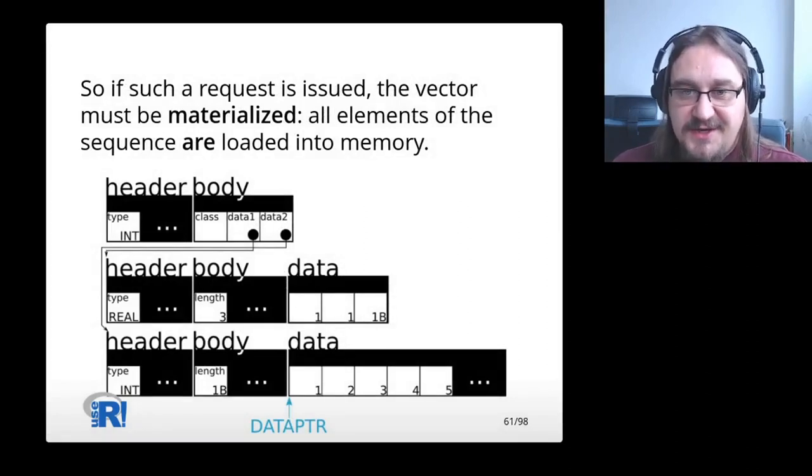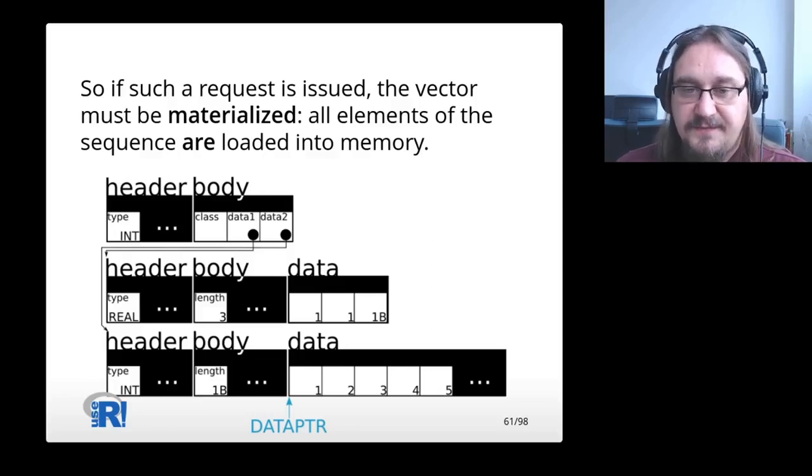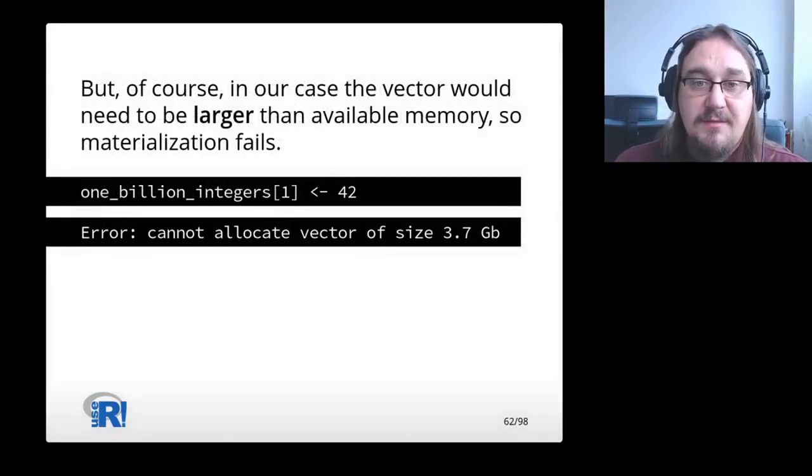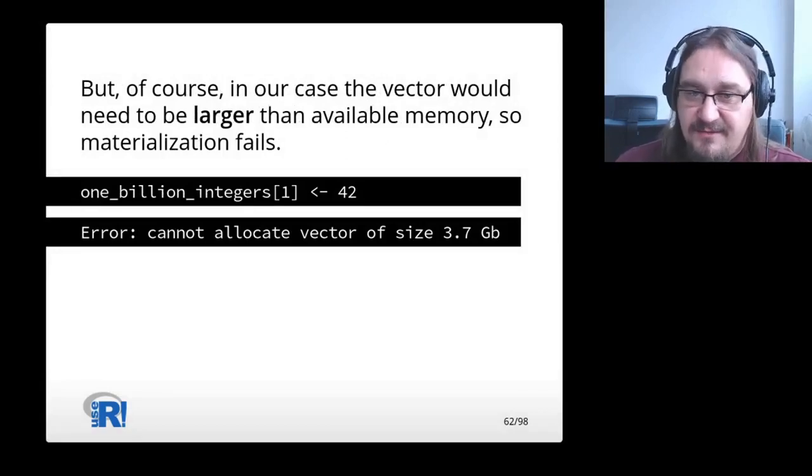Since a sequence does not have any area of memory where it keeps all the elements of the sequence, it can't fulfill this request. So if such a request is issued, the vector must be materialized. All elements of the sequence are loaded into memory. In the case of compact integer sequences, that means that a new ordinary R vector is created with all of the elements of the sequence located in its data section, and a data pointer to that data section is then returned. But of course, in our case, the vector would need to be larger than available memory, so materialization fails.